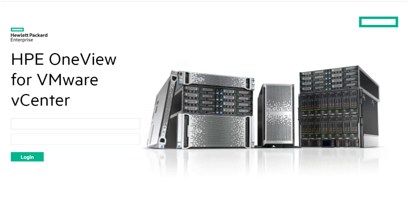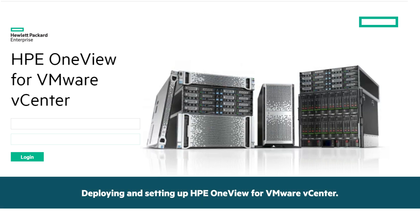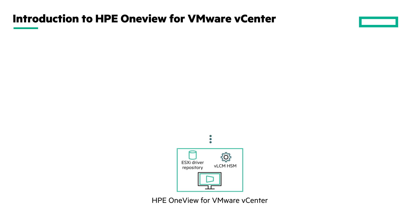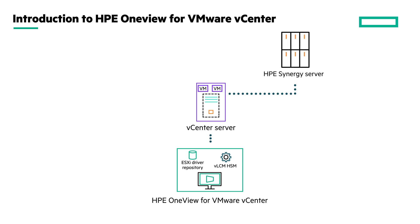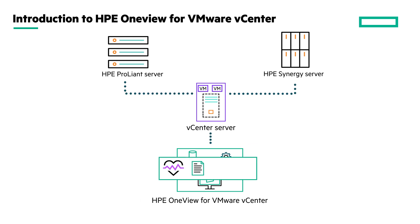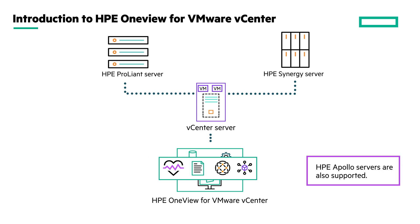This video demonstrates how to deploy and set up HPE OneView for VMware vCenter. HPE OneView for VMware vCenter is a VMware vCenter plugin used to manage HPE Synergy and HPE ProLiant servers. This plugin simplifies administration by providing easy access to health, inventory, and physical and virtual views of your virtualized infrastructure via the VMware vSphere client.